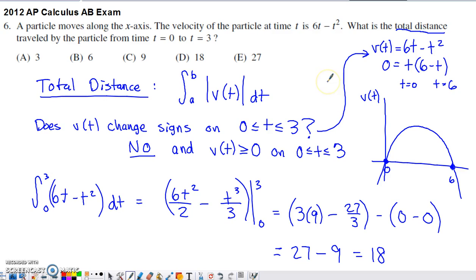So this particular situation has kind of a tricky layer to it because we are looking for total distance. We're considering it on the interval from zero to three, so the question becomes, does the velocity ever change signs anywhere between zero and three?